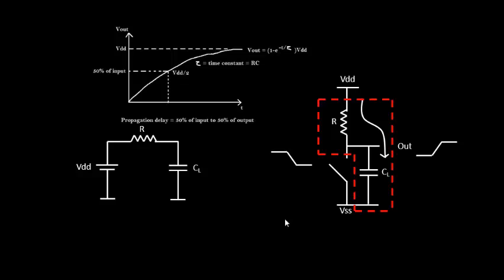In the next video we will finally conclude how drain current becomes a function of resistance, and how the variations we talked about in previous videos directly affect the propagation delay. Let's continue all this in the next video. Thank you.